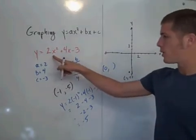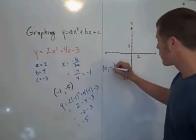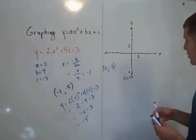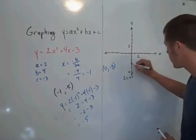Well, plug in 0 here, plug in 0 here. In fact, both of these terms end up being 0, and we end up with the point 0, negative 3. So go ahead and plot that point. 0, negative 3. That's here.